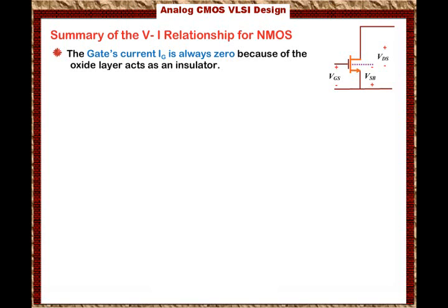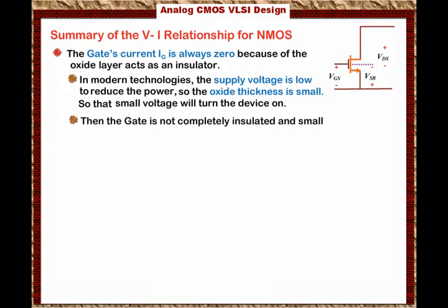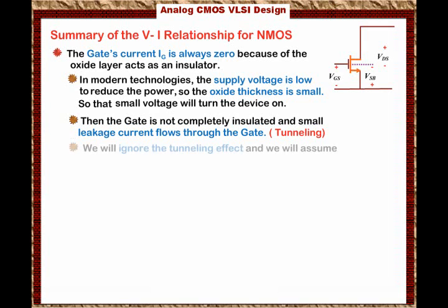There are important notes about the gate current we would like to stress. In modern technologies, the supply voltage is low to reduce consumed power. So the oxide thickness is small, so that a small VGS will turn the device on. However, because the thickness is small, the gate is not completely insulated, and a small leakage current flows through the gate — that is called tunneling. In this course, we will ignore the tunneling effect and assume the gate current is zero, but in modern technology tunneling does exist.